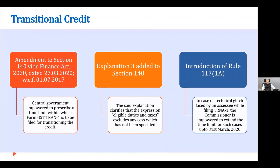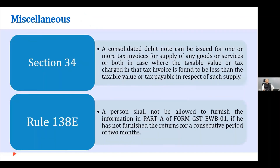There are some miscellaneous changes. Earlier, for every tax invoice only one debit note could be issued because the system was designed that way. Amendments have been made allowing a consolidated debit note to be issued for a number of tax invoices — which has been quite welcome by assessees.